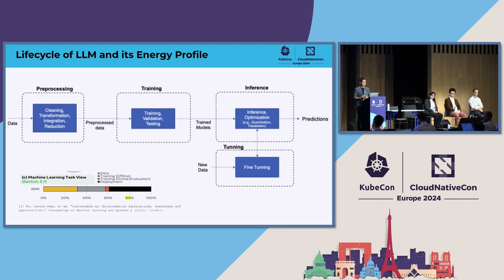Once the model is built, you do inference and fine-tuning, and you can reuse those models. You take a base model and fine-tune it for reuse. This is the entire life cycle. You can add more cycles on top — prompt tuning, and other tuning methods — but this covers the big chunk of the large language model cycle.